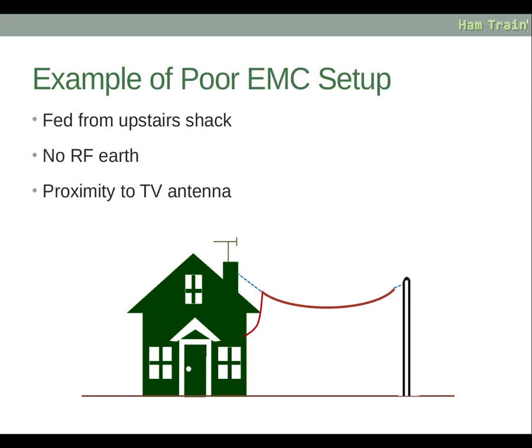Here's an example of a poor setup: it's fed from the upstairs shack, which means you can't run an RF earth because you're on the first floor. It's also fed from the house end, meaning the feed point is close to the house and can cause interference. The feed point is also close to the TV aerial on top of the roof — so this is a pretty poor setup, and you're likely to cause interference. If you're looking to set something up, please ask advice from your tutor, who can help you achieve a good, reliable setup for your own property.